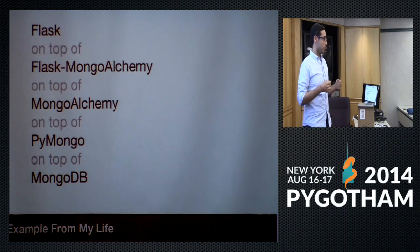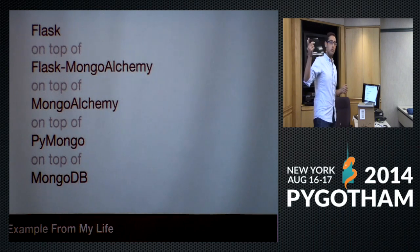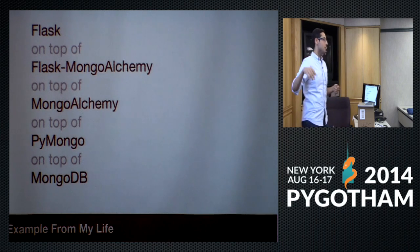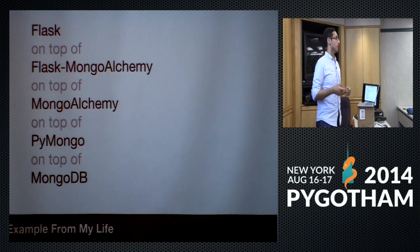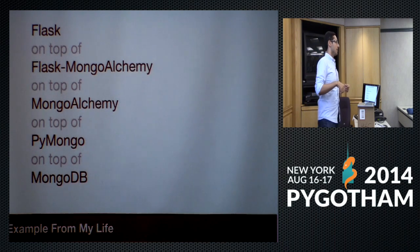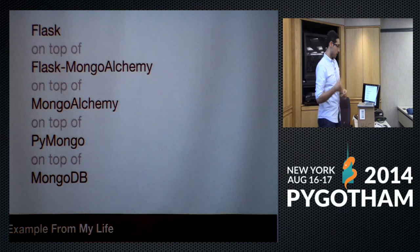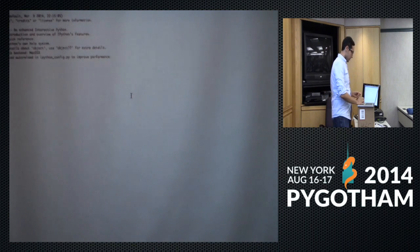I'm the main engineer at a health technology startup and I had to build a web application using this stack: Flask, MongoDB, PyMongo (which wraps MongoDB), MongoAlchemy on top as an ORM, FlaskMongoAlchemy connecting to Flask, and Flask itself as the microframework. I had used zero of these things before, and I really didn't know where one ended or the other began when reading source code.